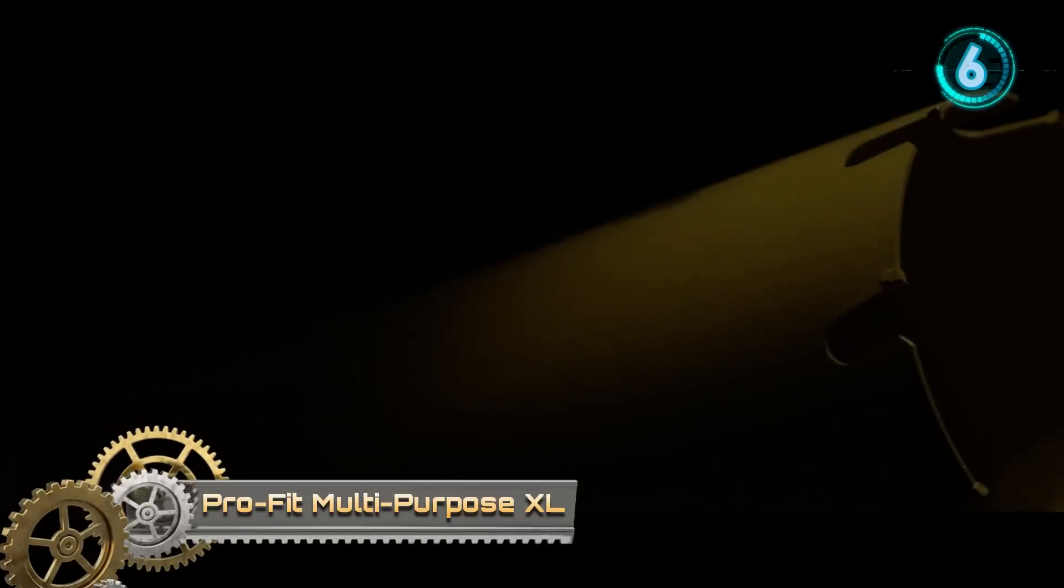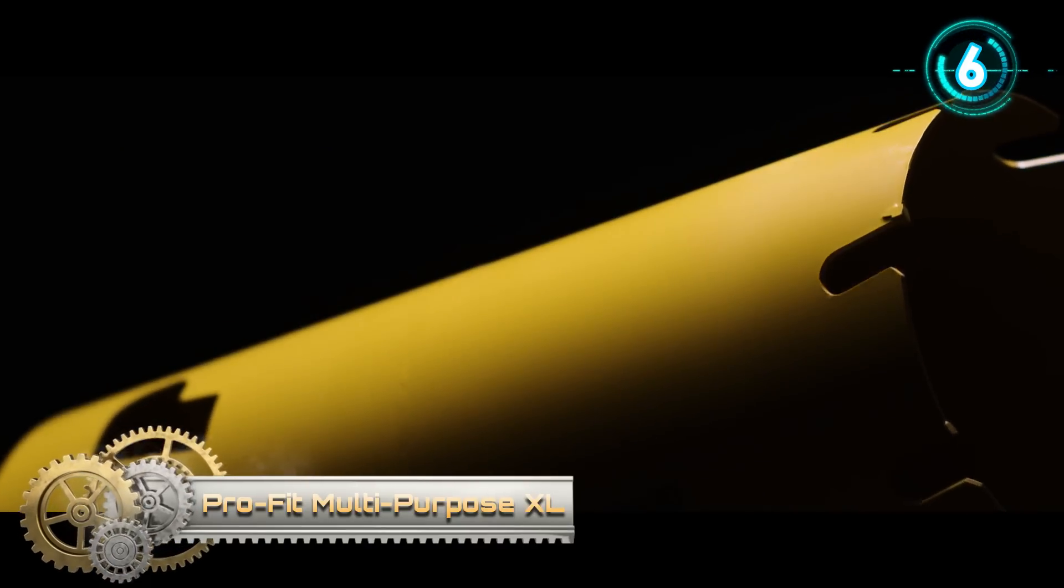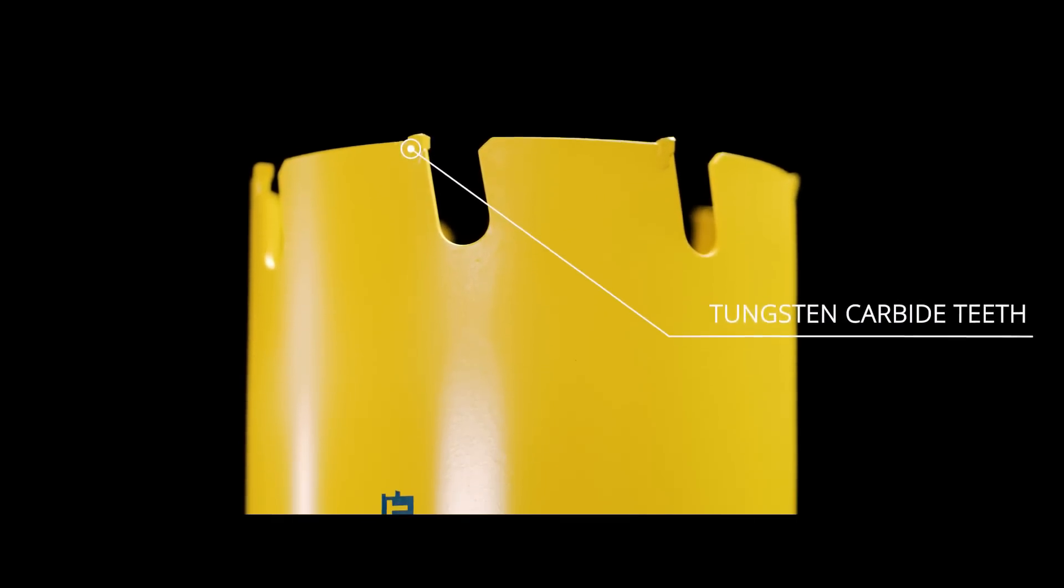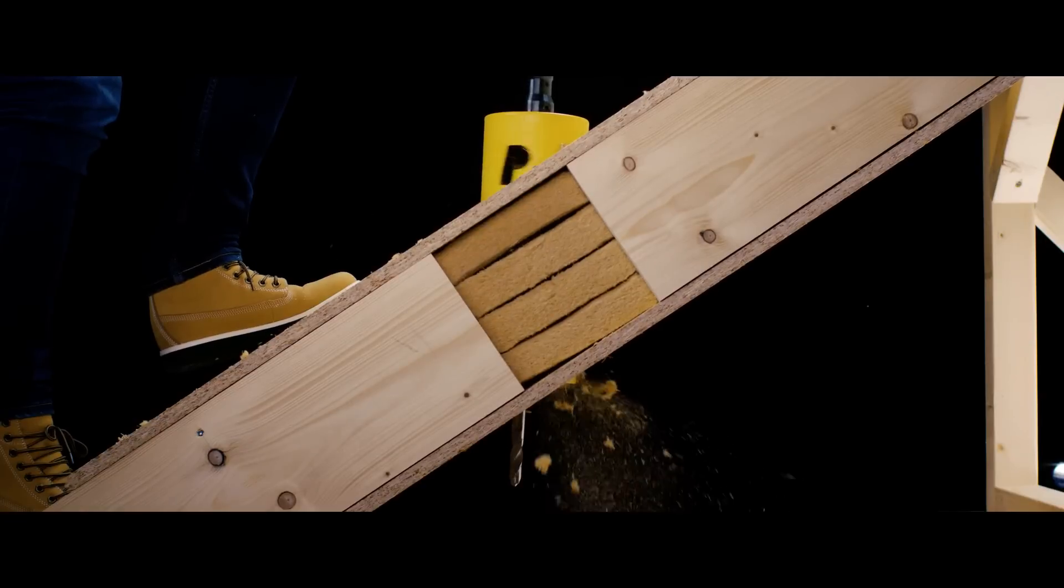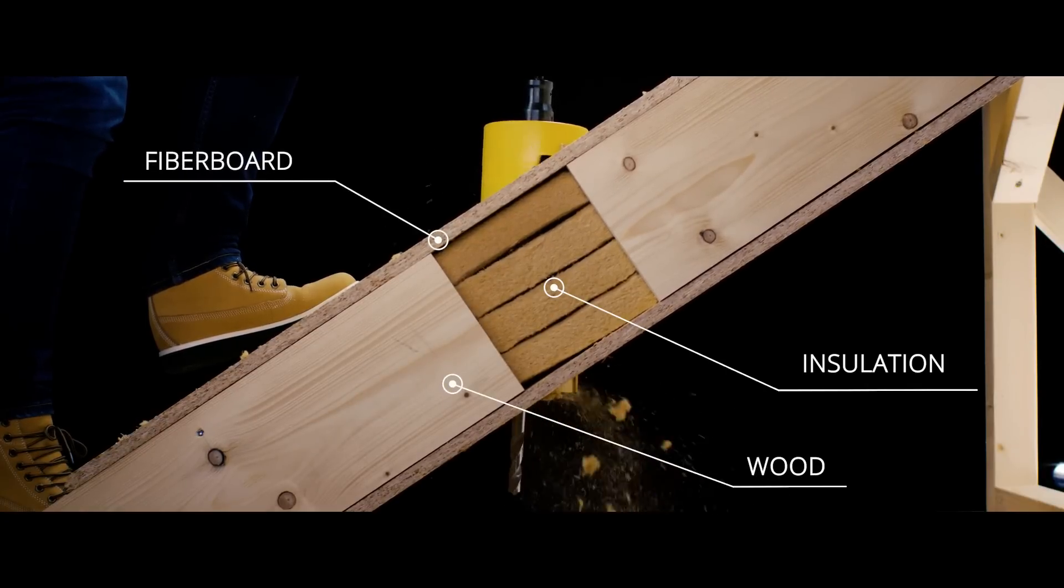Pro-Fit Multi-Purpose X-Cell. Its natural habitat is high above the ground on the top of roofs. With his tungsten carbide teeth, he bites through his prey within a matter of seconds, feeding himself on various elements such as wood, fiberboard, and insulation.